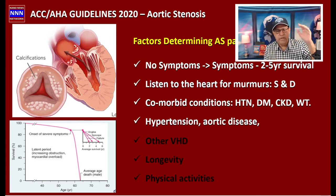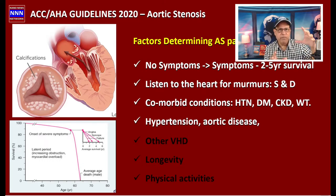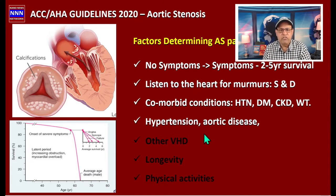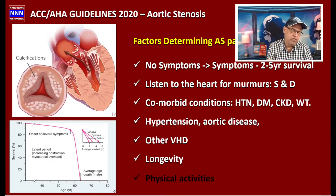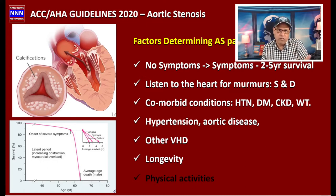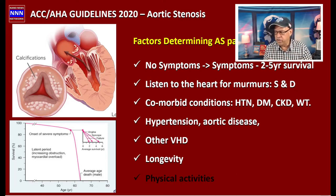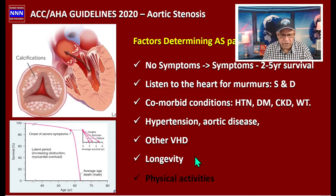When blood pressure is extremely high there is more resistance to the left ventricle, and you may get a spurious gradient. So we take away the element of hypertension as a cause for abnormal gradient by measuring when blood pressure is normal. In patients with rheumatic valvular heart disease, they may also have mitral stenosis, mitral regurgitation, tricuspid regurgitation, pulmonic regurgitation, and pulmonary hypertension — all of which need to be taken into account.